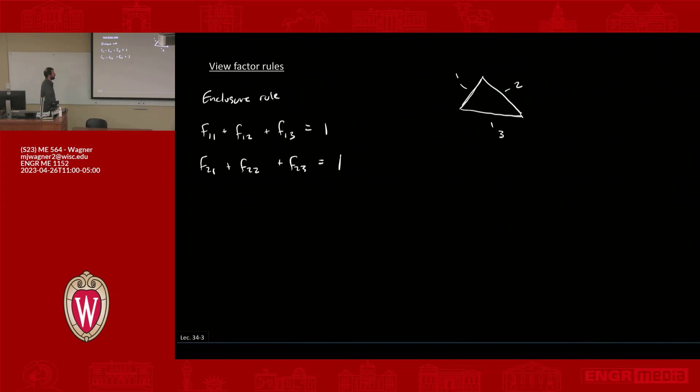We can write this generally as: for any number of surfaces, the summation from j equals one to n, where n is the number of surfaces, of fᵢⱼ is equal to one, and that is for all i. For all i in the set one to n. Just to remind ourselves of the nomenclature, we're summing for a given j—j from one to n for a given i—that all equals one. Then you can reapply that same rule every time you update your value of i. Okay, that's the enclosure rule.